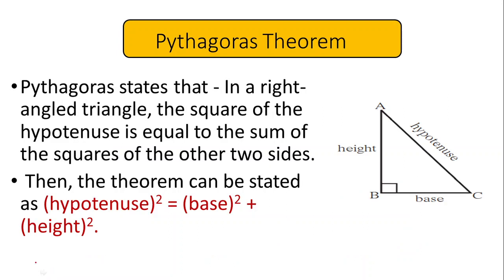Pythagoras theorem is applicable compulsorily to a right angle triangle. What it says is: in a right angle triangle, the square of the hypotenuse will be equal to the sum of the remaining two sides squared. So the square of the hypotenuse is equal to the sum of base squared and height squared. This is the Pythagoras theorem.